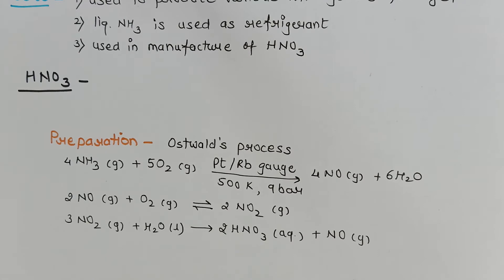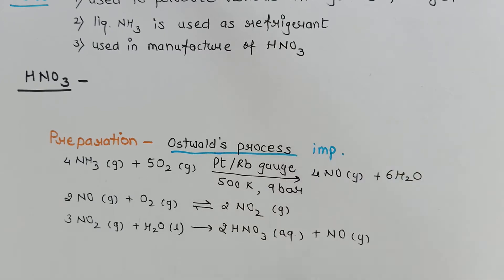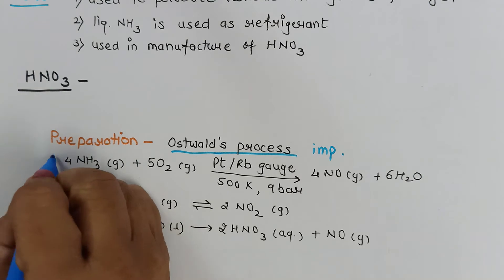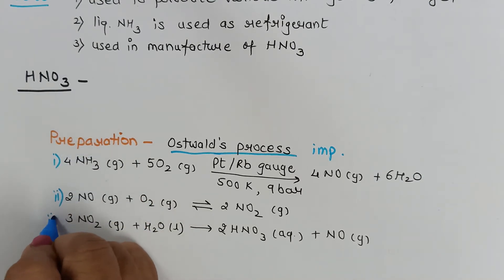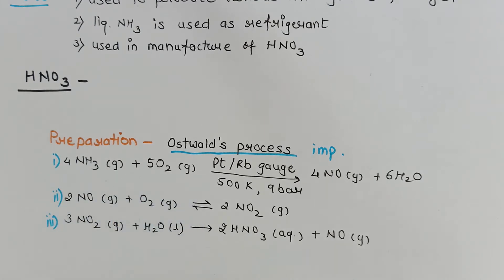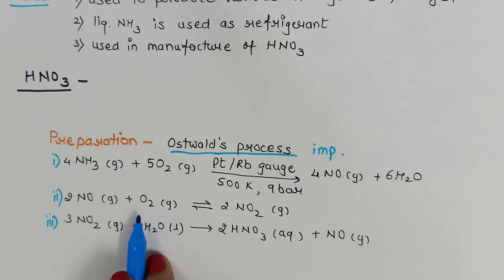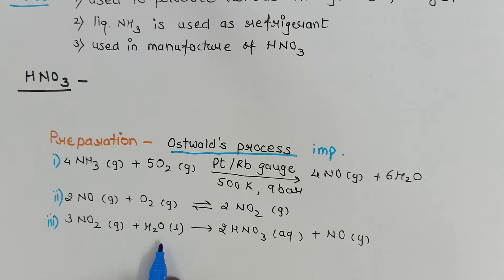Nitric acid is prepared by Ostwald's process, which is an important process. There are three steps. In the first step, ammonia is passed through oxygen-rich air in the presence of a catalyst at 500 K and 9 bar to give nitric oxide. That nitric oxide is further treated with oxygen to give nitrogen dioxide, which on dissolving in water gives nitric acid along with nitric oxide as a byproduct.